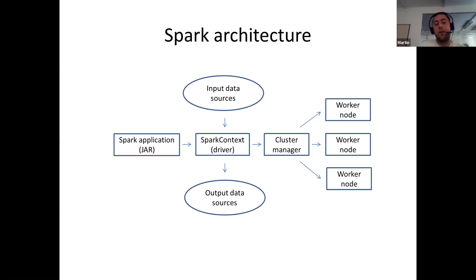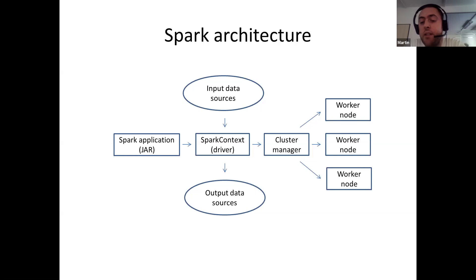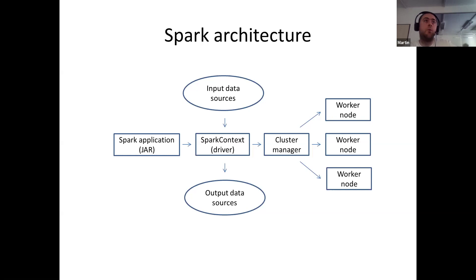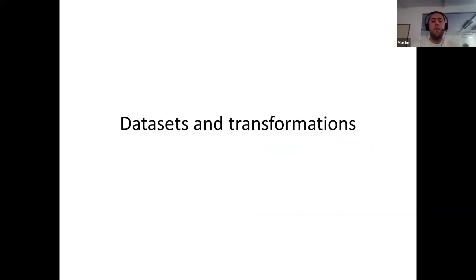Looking at the general Spark architecture: a Spark application uses a Spark context to interact with the Spark cluster. The Spark context might reside as a separate application not part of the cluster, or it might be a separate node within it. We use the Spark context to provide the logic for our data processing pipelines, which are executed by a Spark cluster manager that distributes those pipelines across one or more nodes. Results are returned back through the cluster manager and Spark context to the application.